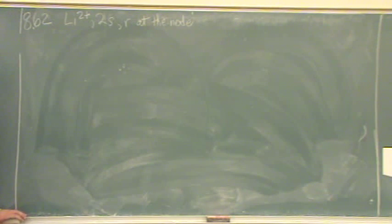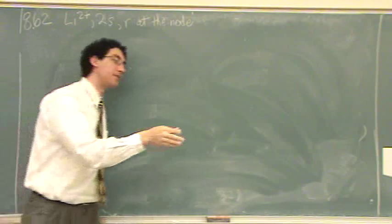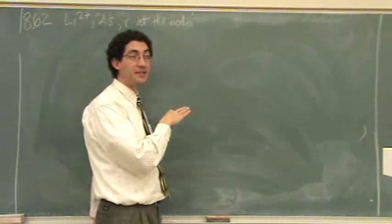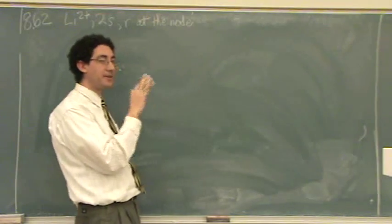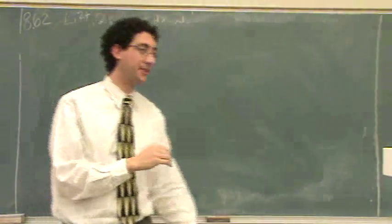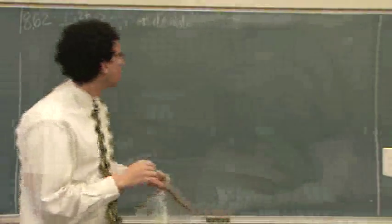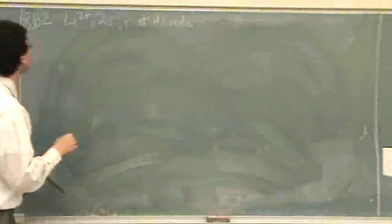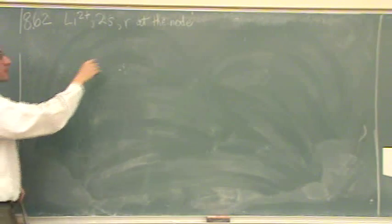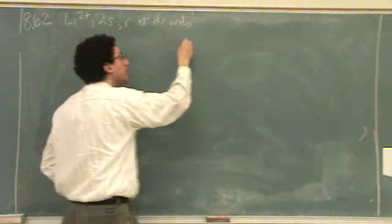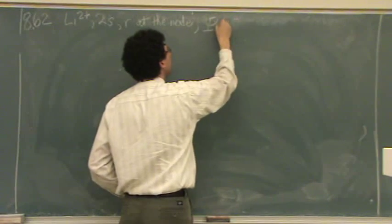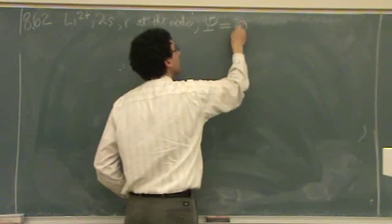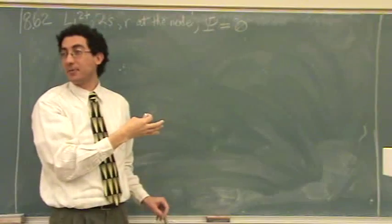All these questions will follow the same procedure. In this case, someone was asking earlier why we would need the function. Here's an example where you need the function. When you want to find r at the node, the key part is: what's ψ equal to at a node? Zero. That's the key thing you need to remember.